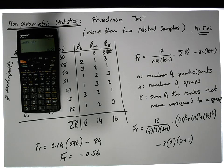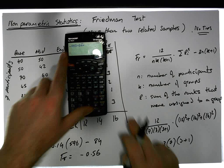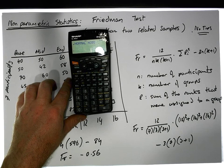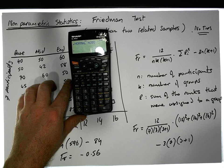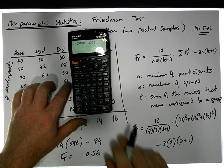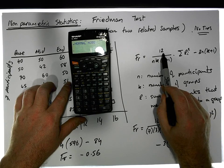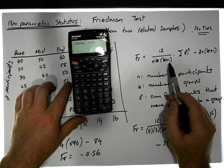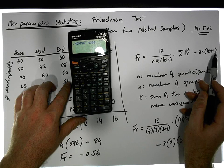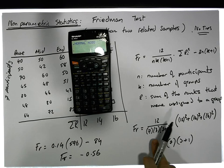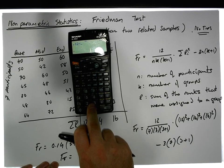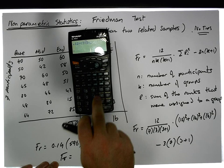Now we have to rule our hypothesis test to actually test this test statistic. Let me just sanity check this here again, make sure I have everything right. Yes, it's 12 divided by n times k times k plus 1, times the sum of the r squares, minus 3n times k plus 1. That's perfect. I'm just going to look at this factor here again: 12 divided by 7 times 3 times 4 gives us a factor of 0.1428.